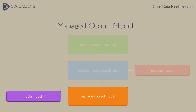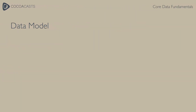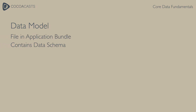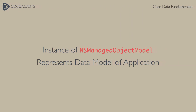This diagram shows that the managed object model is connected to the data model. The data model is represented by a file in the application bundle that contains the data schema of the application. The data schema is a collection of entities. An entity can have attributes and relationships, which make up the data model. Remember that the managed object model is an instance of NSManagedObjectModel and it represents the data model of the Core Data application.